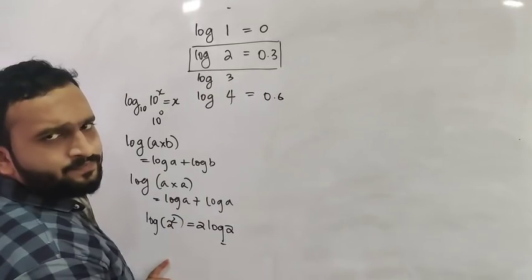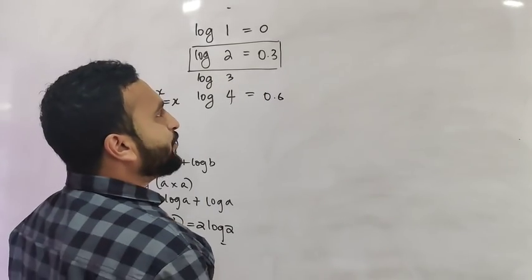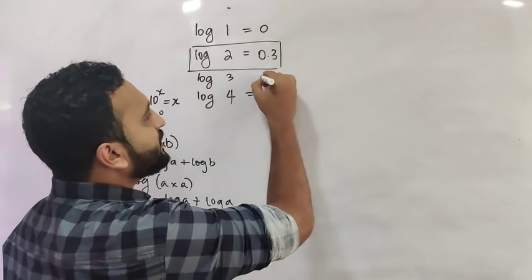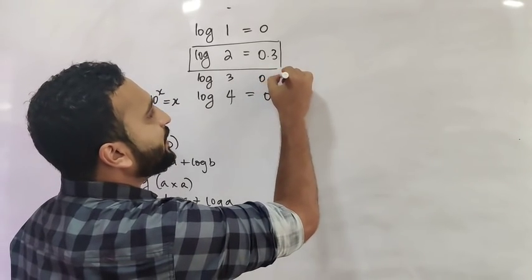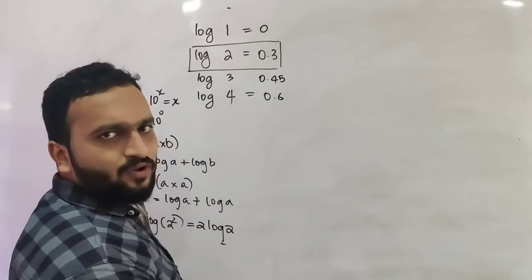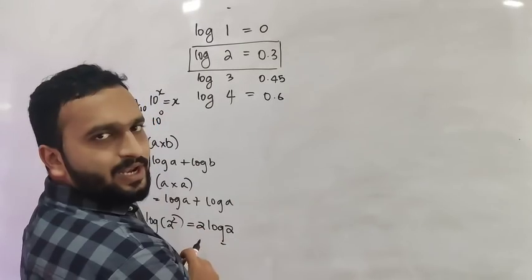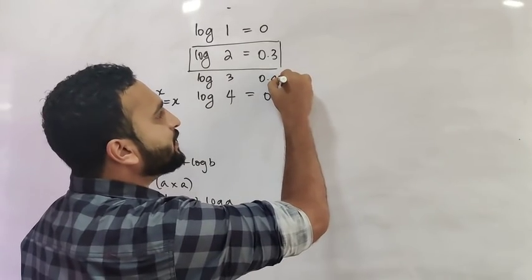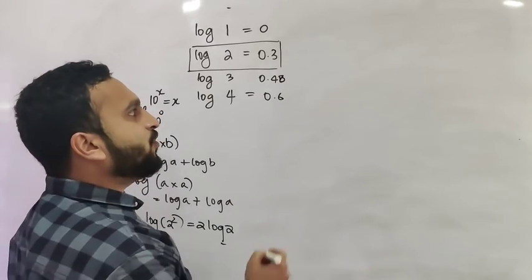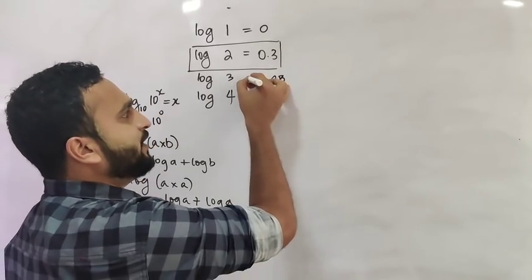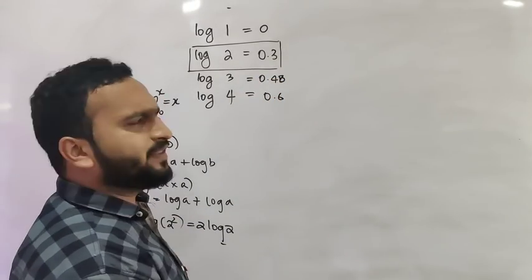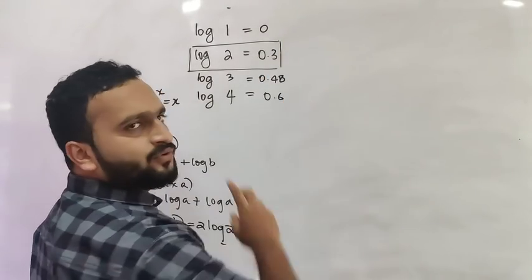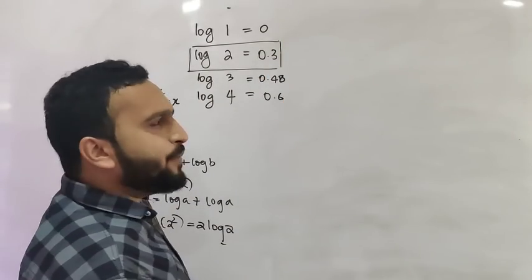Log of 3 is approximately 0.48. If you take the average between 0.3 and 0.6, that gives 0.45, but the actual value of log 3 is approximately 0.48.